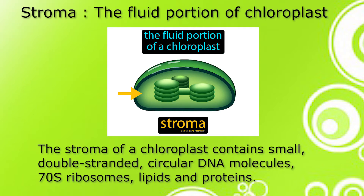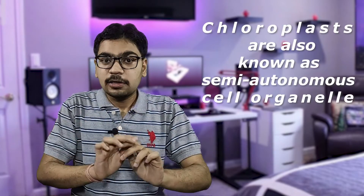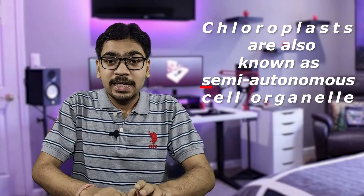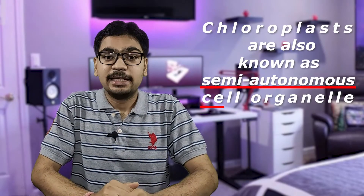The stroma of a chloroplast contains small double-stranded circular DNA molecules, 70S ribosomes, lipids, and proteins. Since chloroplasts can replicate independently and can synthesize their own proteins, they are also known as semi-autonomous cell organelles.